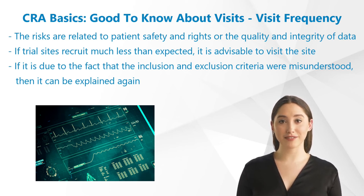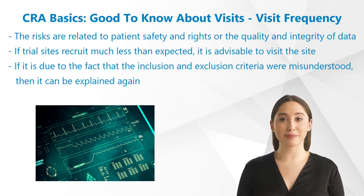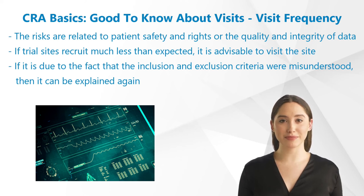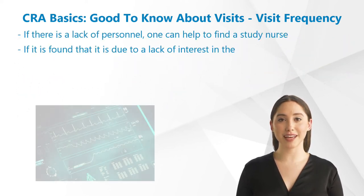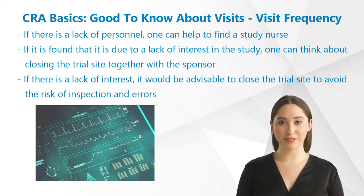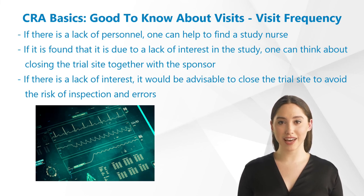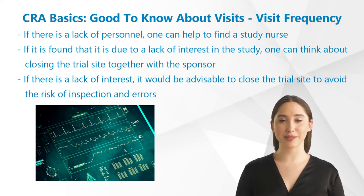Even if trial sites recruit much less than expected, it is advisable to visit the site to find out the reasons for poor recruitment. If it is due to the fact that the inclusion and exclusion criteria were misunderstood, then it can be explained again. If there is a lack of personnel, one can help to find a study nurse, and if it is found that it is due to a lack of interest in the study, one can think about closing the trial site together with the sponsor.